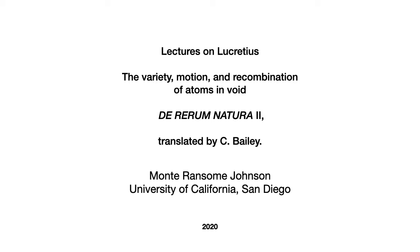My name is Monty Johnson and I teach philosophy at the University of California, San Diego. This is the second of six lectures on Lucretius, this one on the variety, motion, and recombination of atoms and void according to Lucretius in De Rerum Natura book 2. I'm using the translation of Cyril Bailey, which is available in the public domain through the internet archive.